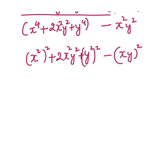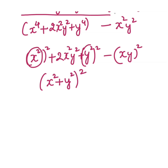Now this is in the form of a squared plus 2ab plus b squared. So we can write it as a plus b whole square, that is x squared plus y squared whole square. In place of a, we have x squared; in place of b, we have y squared. So it will be a plus b whole square minus xy whole square.